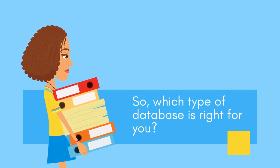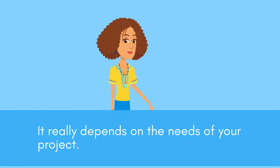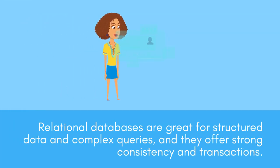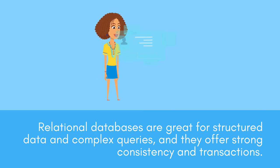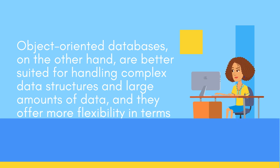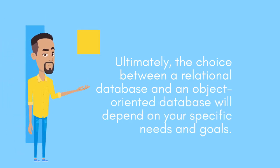So, which type of database is right for you? It really depends on the needs of your project. Relational databases are great for structured data and complex queries, and they offer strong consistency and transactions. Object-oriented databases, on the other hand, are better suited for handling complex data structures and large amounts of data, and they offer more flexibility in terms of data modeling. Ultimately, the choice between a relational database and an object-oriented database will depend on your specific needs and goals.